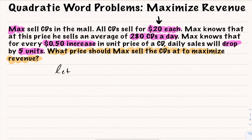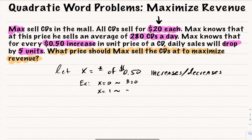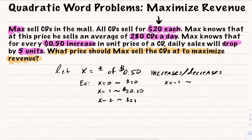We're going to let X equal the number of 50-cent increases or decreases. So X equals zero means we did not change the price at all — it stays at $20. If X is one, we increase the price by 50 cents. If X is two, we increase the price by two increments of 50 cents, so the new CD price would be $21. Likewise, if we go negative, X equals negative one means we decrease the price to $19.50.